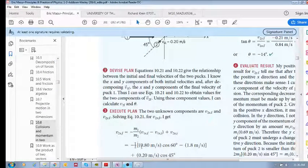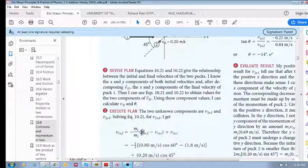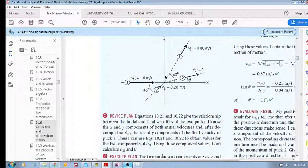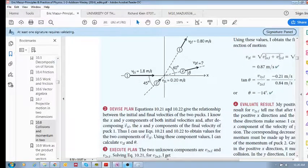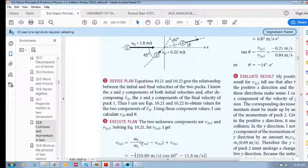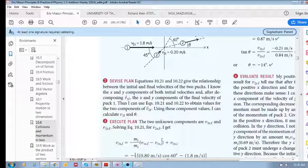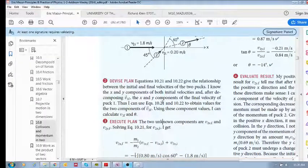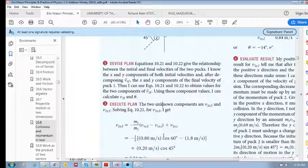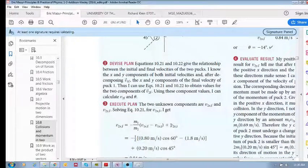What is v1x final? Well, we know it would be 0.8 cos 60 minus v1x initial. What is the x component of the initial velocity? It would be this entire thing because it is already moving along the x direction. And then we need v2x initial.